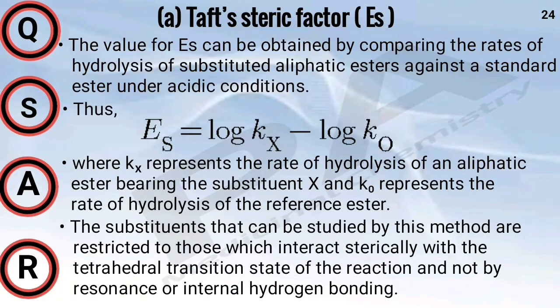Kx represents the rate of hydrolysis of an aliphatic ester having the substituent X, and K0 represents the rate of hydrolysis of the reference ester. The substituents that can be studied by this method are restricted to those which interact sterically with the tetrahedral transition state of the reaction, and not by resonance or internal hydrogen bonding.